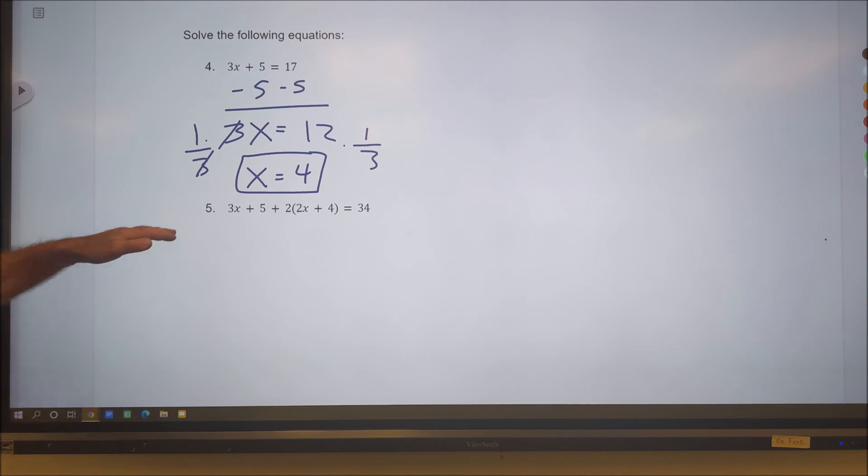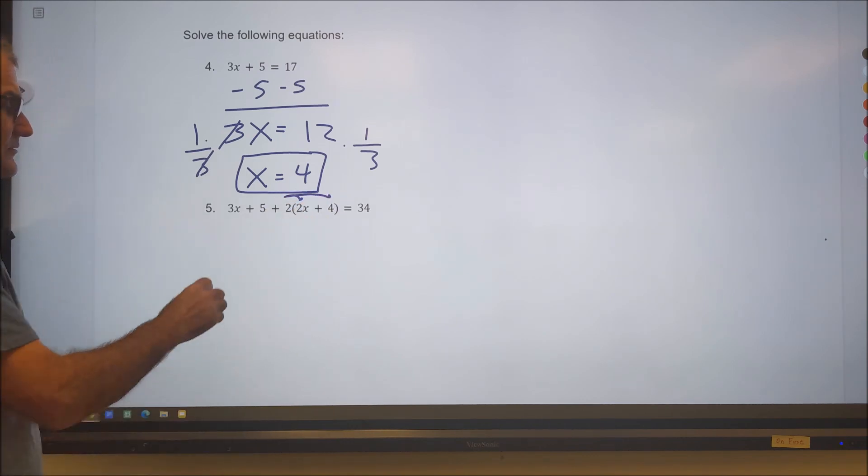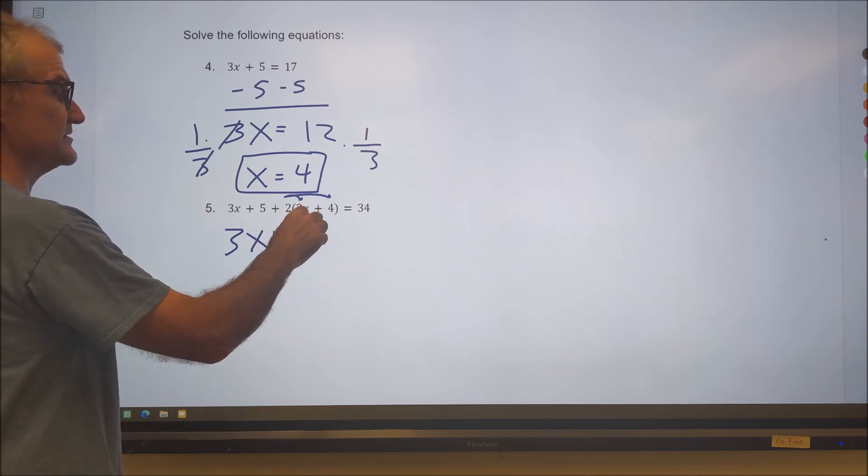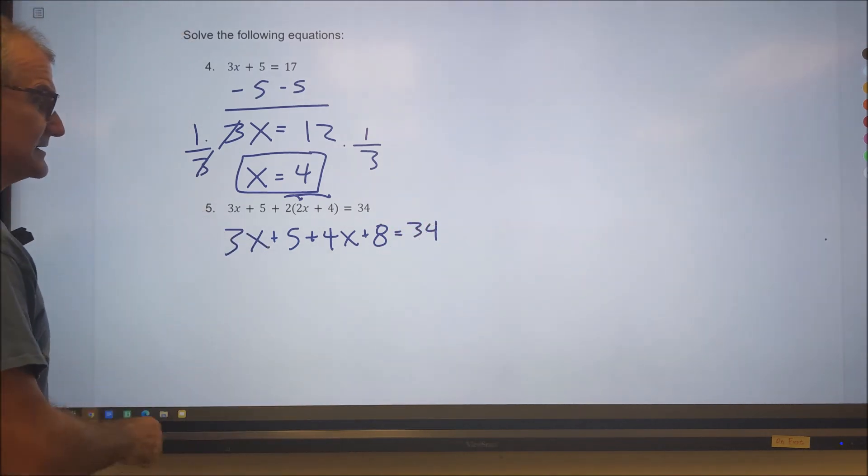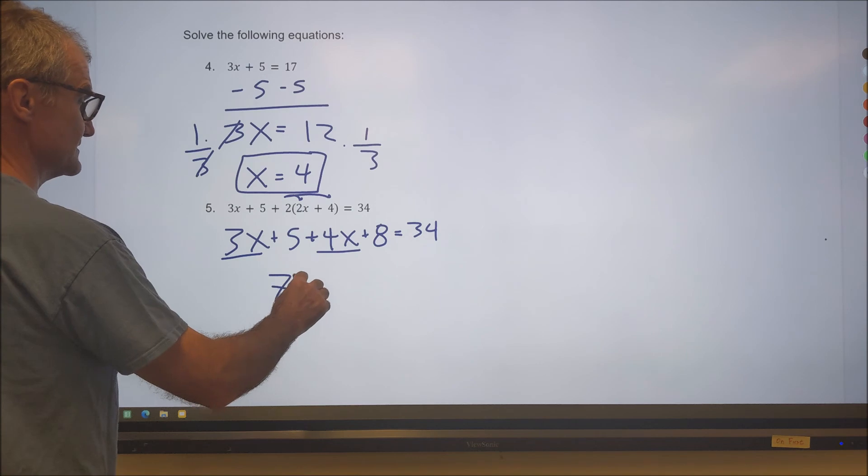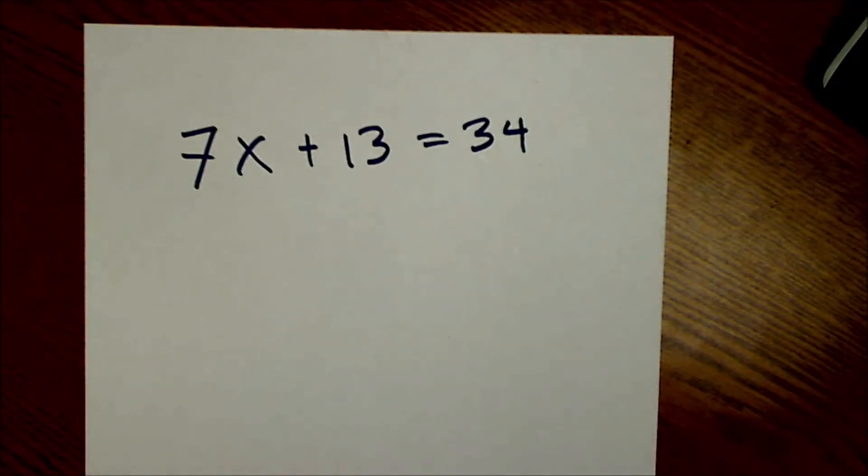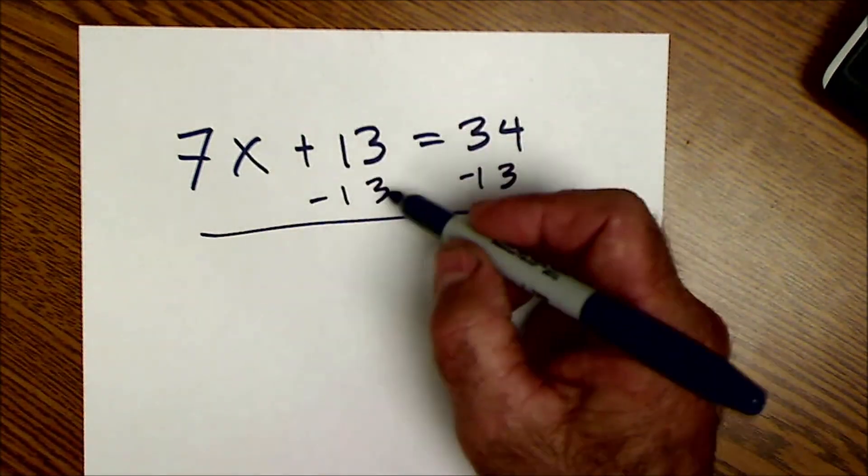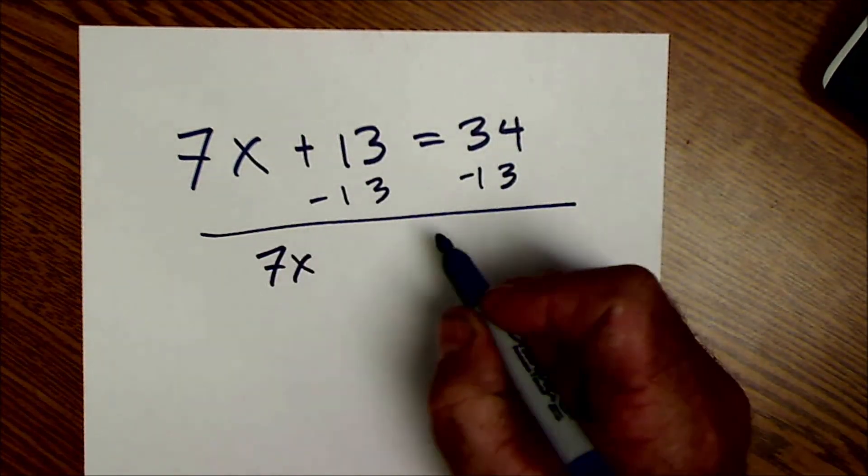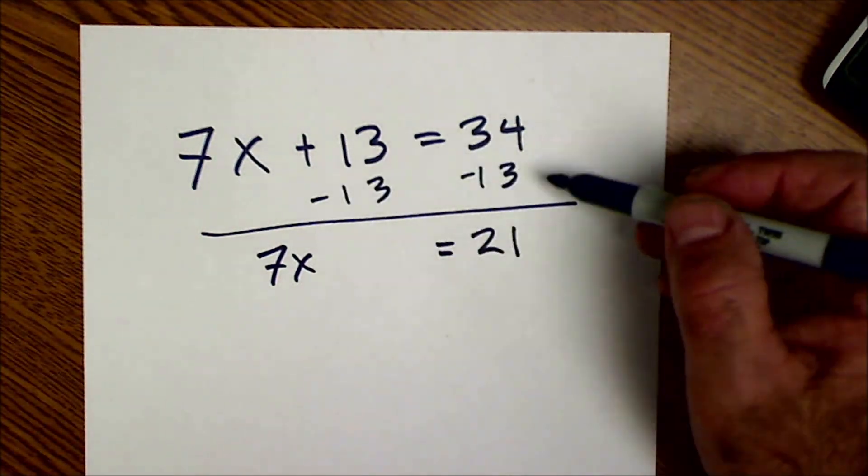My last equation right here. I have to use the distributive property first. So let me distribute that 2 through the quantity. So I have 3x plus 5 plus 2 times 2x, 4x plus 8 is equal to 34. Combine similar terms. 3x and 4x is 7x. 5 and 8 is 13 is equal to 34. First thing I'm going to do is subtract 13 from both sides. That's going to give me 7x by itself. 34 minus 13, 21. I can do whatever I want to the equation as long as I do it to both sides to keep it in balance.